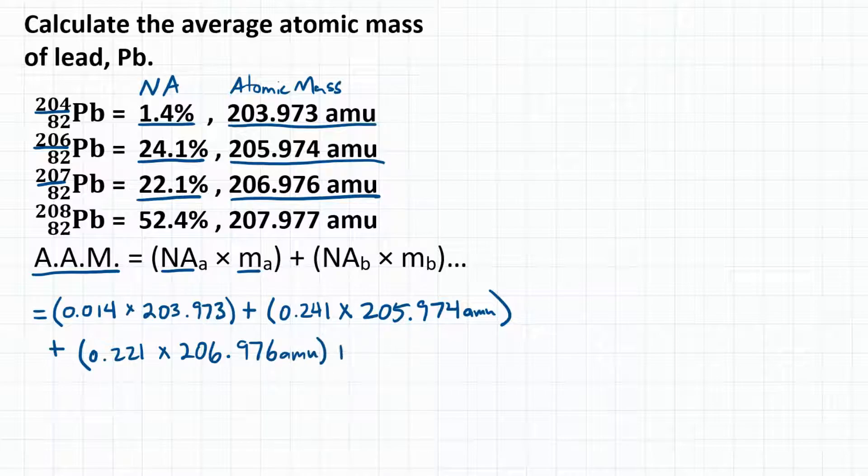And then our fourth isotope is lead-208, with a 52.4% natural abundance, so 0.524, and an atomic mass of 207.977. And don't forget your units.